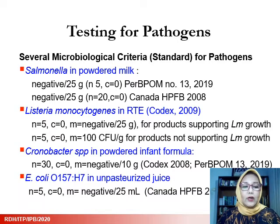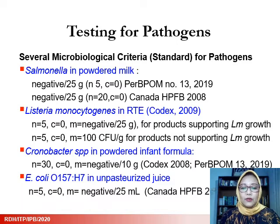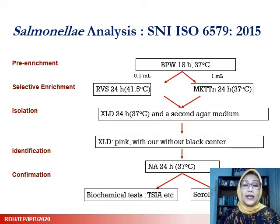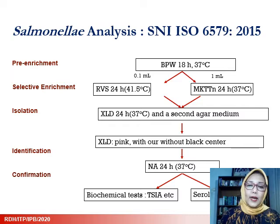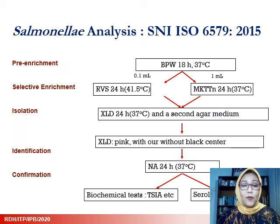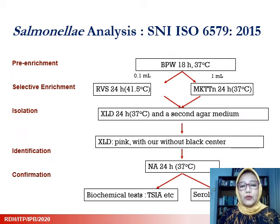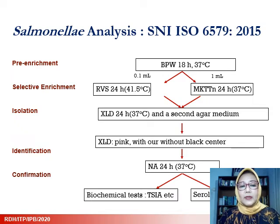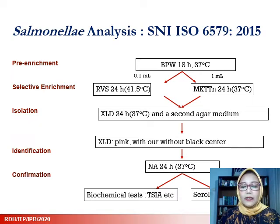Analysis of pathogens is a complex process. Generally it comprises several steps. The first is pre-enrichment, in which cells are grown in a rich medium to recover injured cells — though the drawback is that non-target microorganisms are also enriched. Therefore, this step is followed by selective enrichment, using a medium containing inhibitory substances for non-target microorganisms. This is then followed by isolation, identification, and confirmation, usually using biochemical and serological tests.